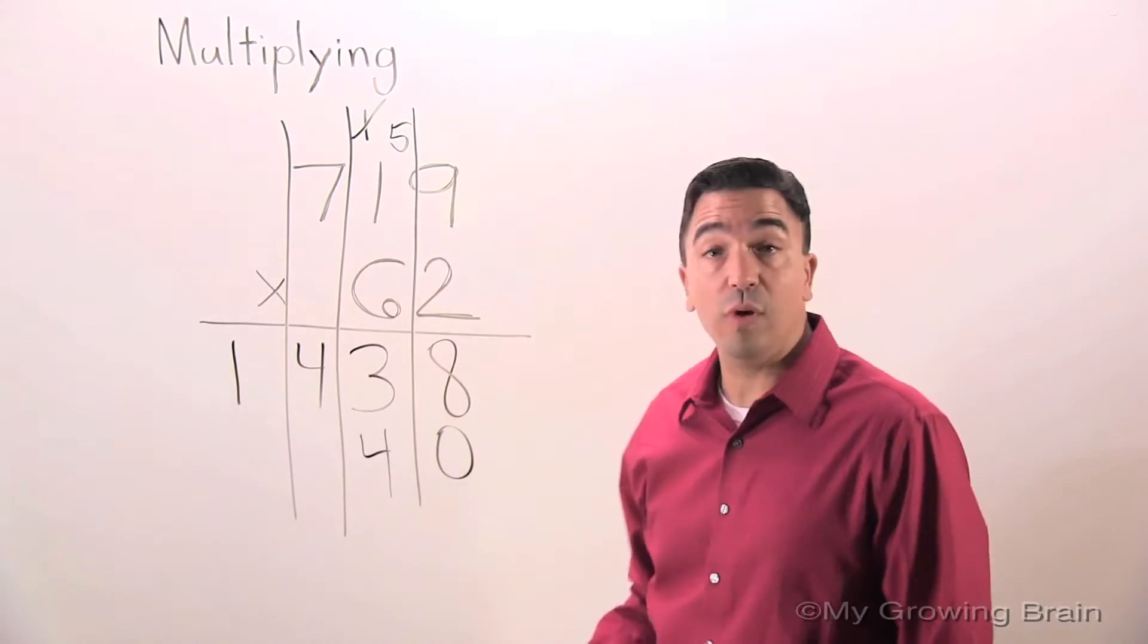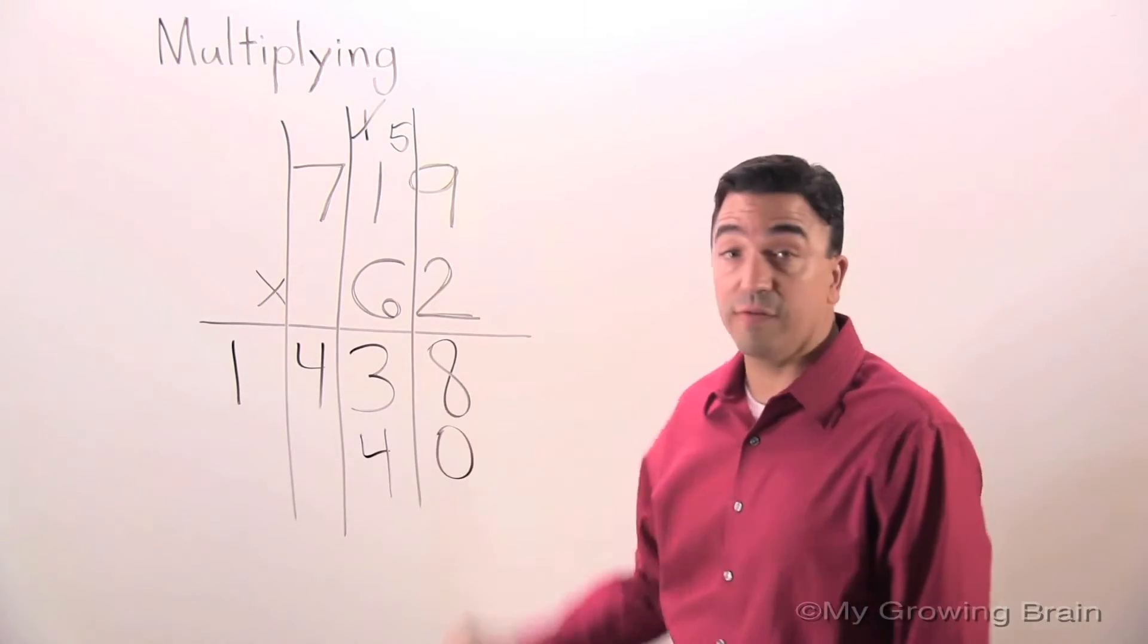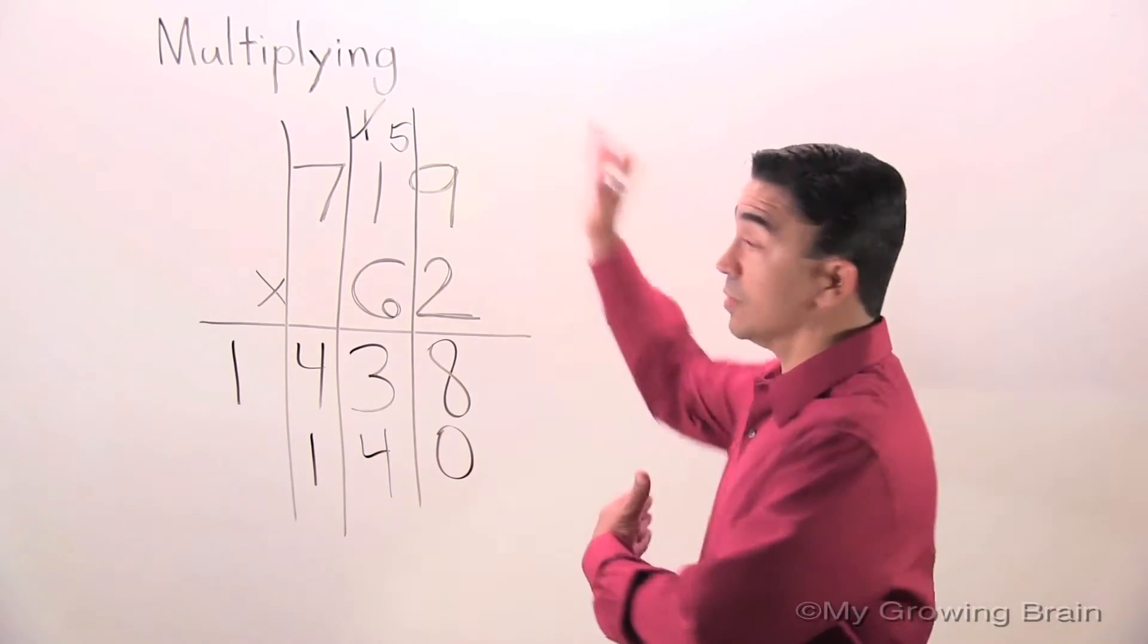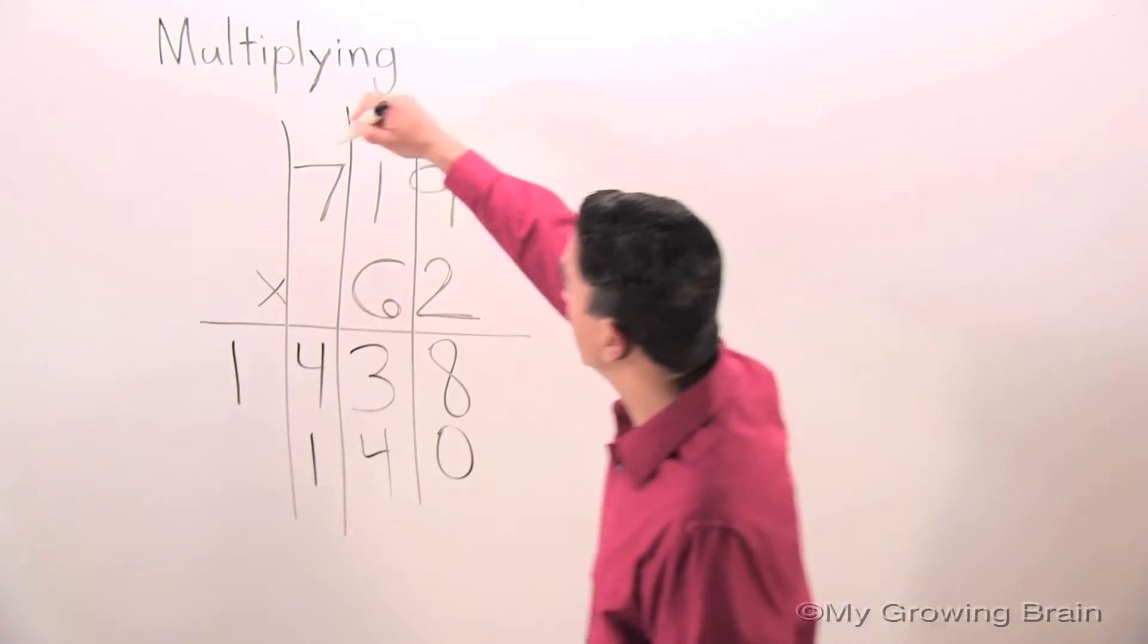Six times one is six. Plus five is 11. Once again, we're going to carry or regroup the one.